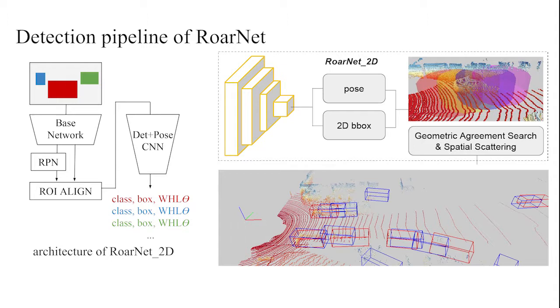We introduce the detection pipeline of RoarNet. We start from RoarNet 2D, an image-based object detector which predicts 2D bounding box and 3D pose of objects. For each 2D object detection, geometric agreement search is applied to predict the location of object in 3D space.